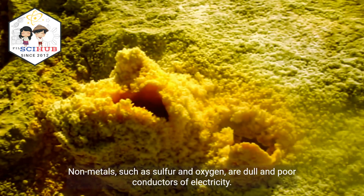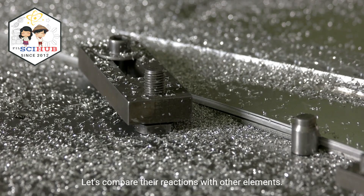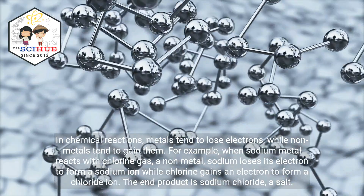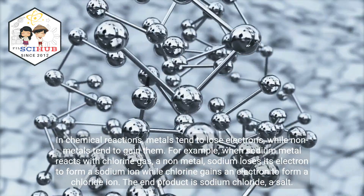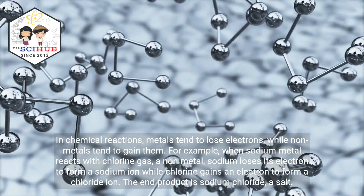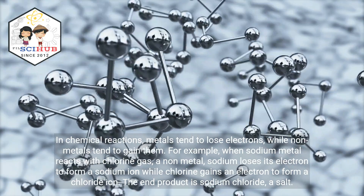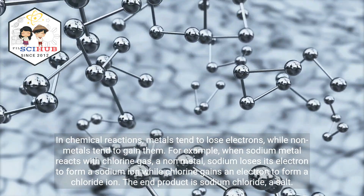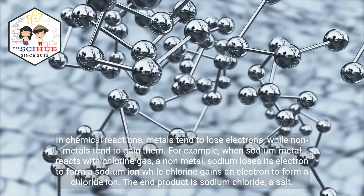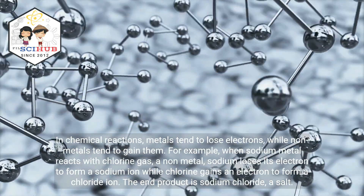Let's compare their reactions with other elements. In chemical reactions, metals tend to lose electrons while nonmetals tend to gain them. For example, when sodium metal reacts with chlorine gas, sodium loses its electron to form a sodium ion, while chlorine gains an electron to form a chloride ion.